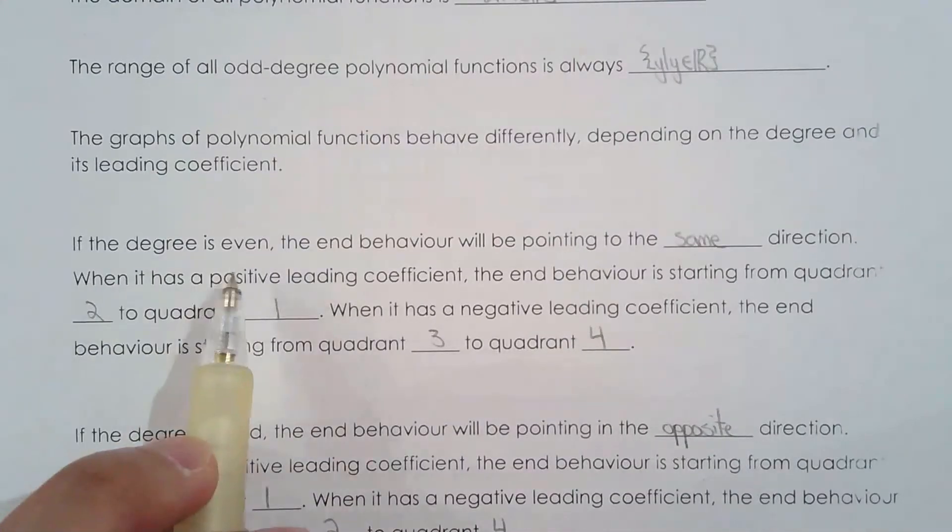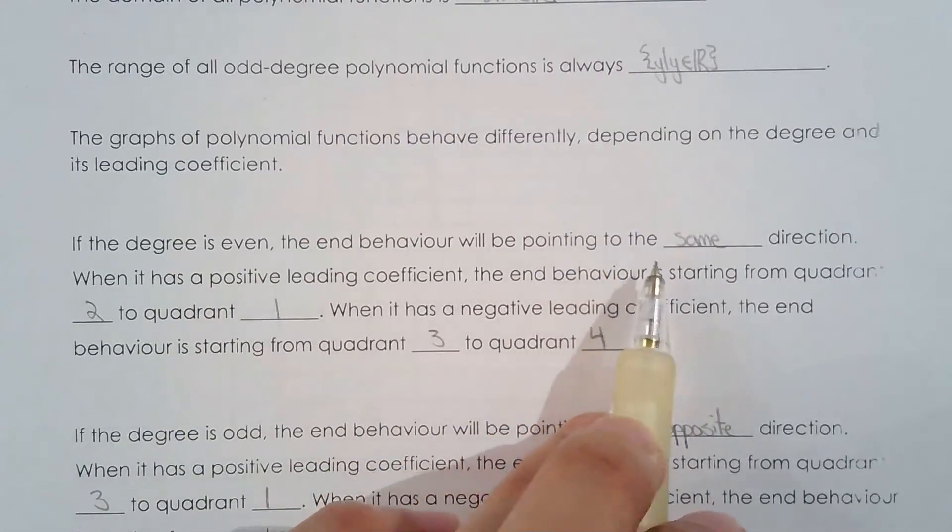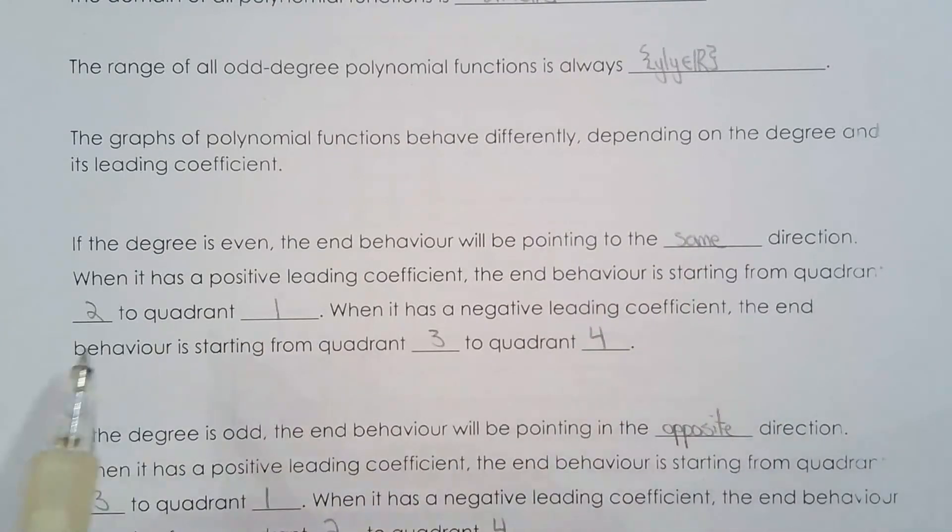If the degree is even the end behavior will be pointing in the same direction and if it's positive leading coefficient it's quadrant 2 to quadrant 1. If it's negative leading coefficient it's quadrant 3 to quadrant 4.